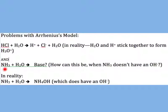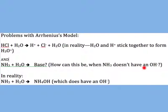There's another problem. You've probably heard that ammonia, when dissolved in water, acts as a base. But remember, according to Arrhenius' definition, in order for a substance to be a base, it has to produce OH⁻ ions — hydroxide ions — in solution. How does ammonia produce OH⁻? NH₃ doesn't have any OH⁻.